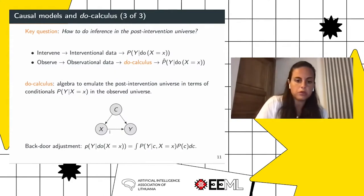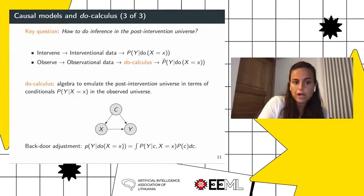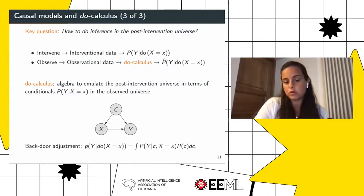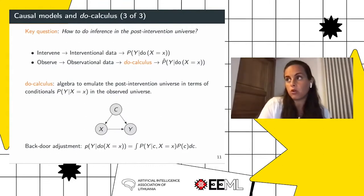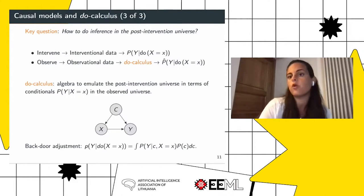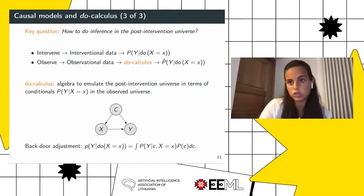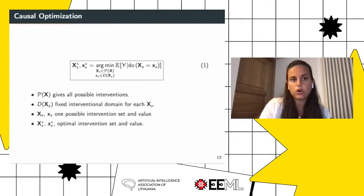How do we infer this interventional distribution? There are two ways: either we actually intervene in the system and collect interventional data to estimate this distribution directly, or we observe the system, collect observational data, and use the do-calculus to get an approximation of the interventional distribution. The do-calculus refers to a set of algebraic rules that transform observational quantities into interventional quantities without realizing the intervention directly. For example, in the X, Y, C graph, we can apply the backdoor adjustment formula to get the interventional distribution as the result of an integral computation. Generally, the do-calculus requires computing integrals that are not available in closed form, so approximations are needed.